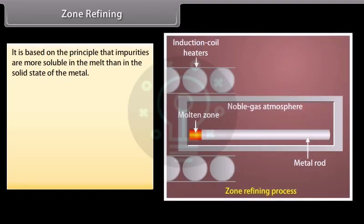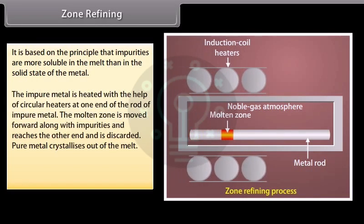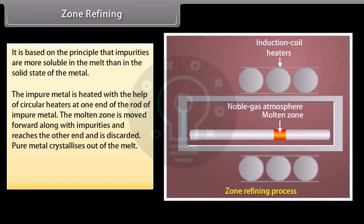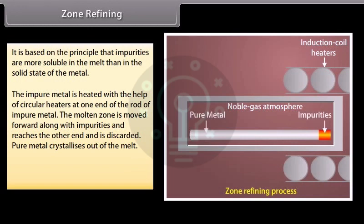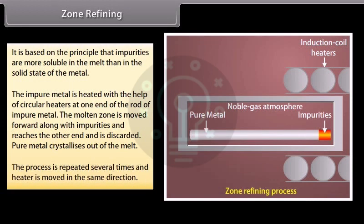Zone refining. It is based on the principle that impurities are more soluble in the melt than in the solid state of the metal. The impure metal is heated with the help of circular heaters at one end of the rod of impure metal. The molten zone is moved forward along with impurities and reaches the other end and is discarded. Pure metal crystallizes out of the melt. The process is repeated several times and heater is moved in the same direction. For example, it is used for purifying semiconductors.